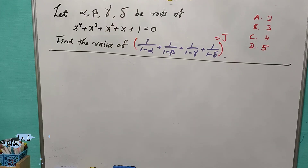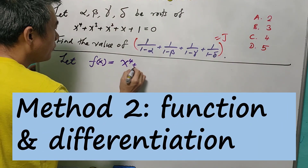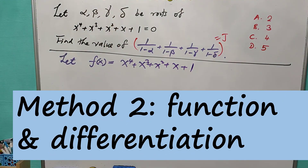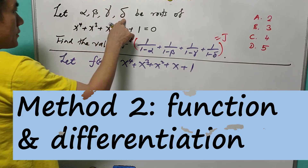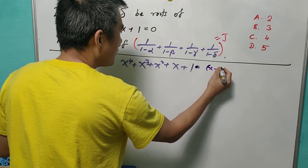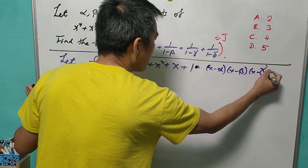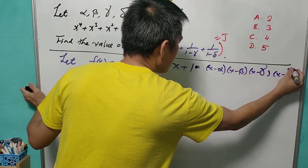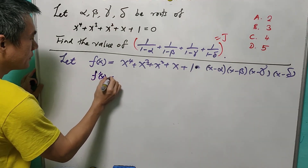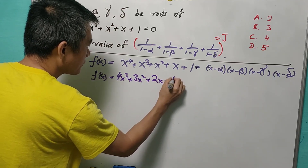For Method 2, we let f(x) = x⁴ + x³ + x² + x + 1. Since α, β, γ, δ are the roots, we can write f(x) = (x−α)(x−β)(x−γ)(x−δ). We also have f'(x) = 4x³ + 3x² + 2x + 1.